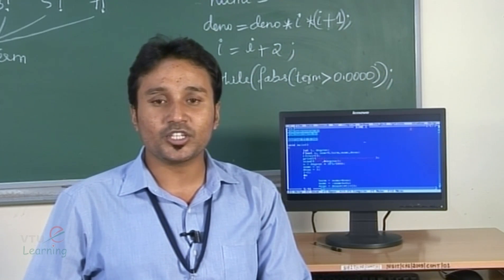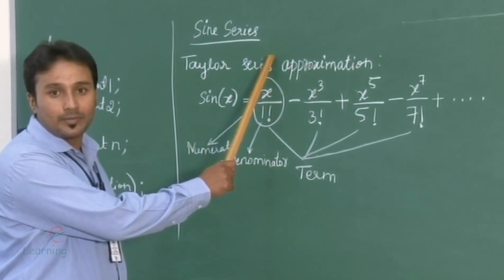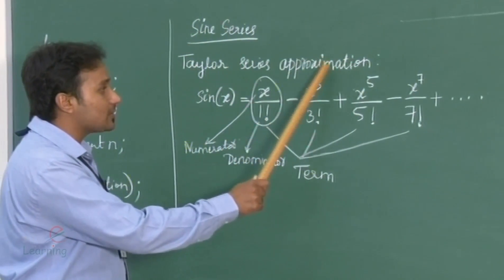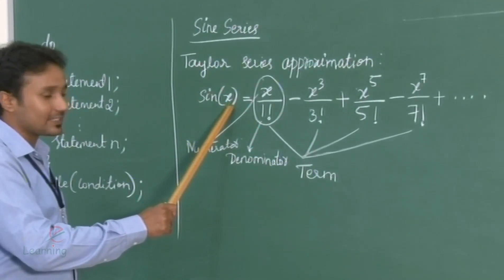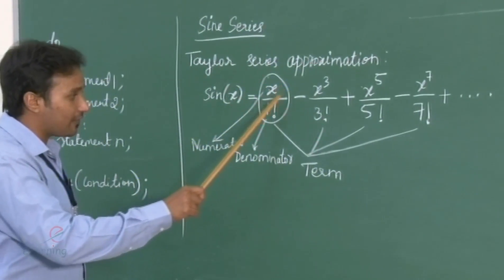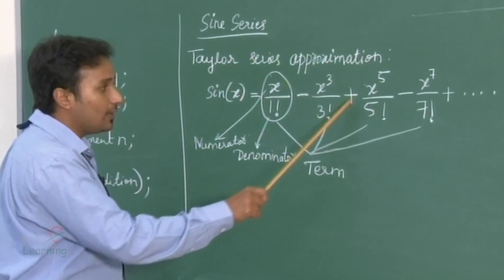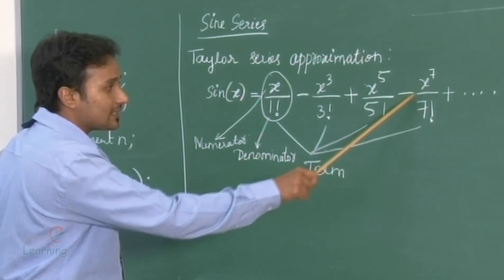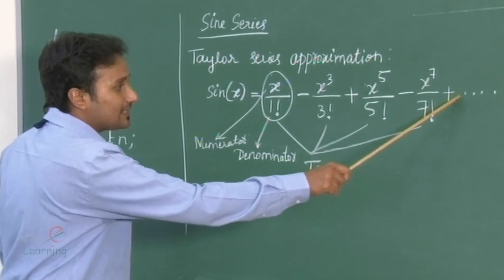Now let us look into the logic of this program. The logic of the sin series program is as follows. The Taylor series approximation method — the standard formula for sin of x is given by x by 1 factorial minus x cube by 3 factorial plus x to the power of 5 by 5 factorial minus x to the power of 7 by 7 factorial, and so on.